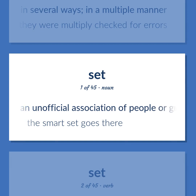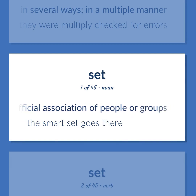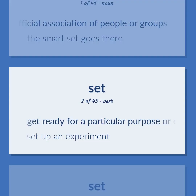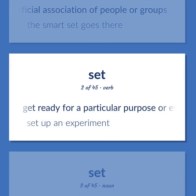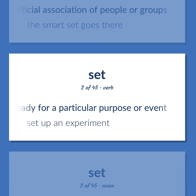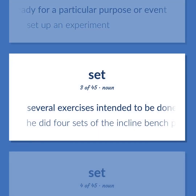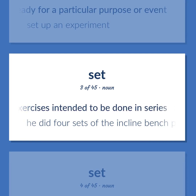Set: An unofficial association of people or groups. Example: The smart set goes there. Get ready for a particular purpose or event. Example: Set up an experiment. Several exercises intended to be done in series. Example: He did four sets of the incline bench press.